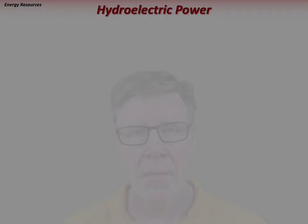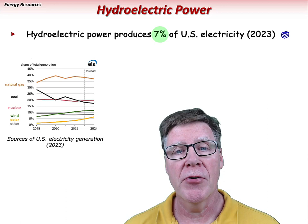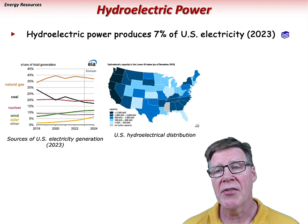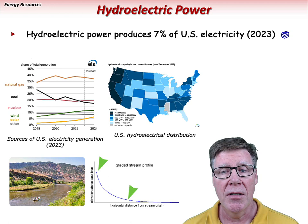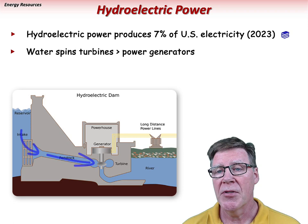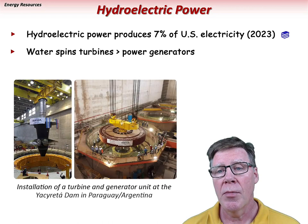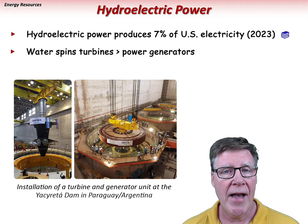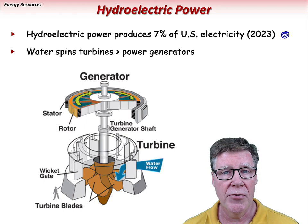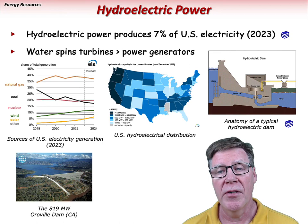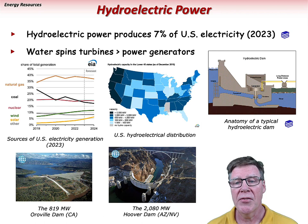Hydroelectric power produces 7% of U.S. electricity as of 2013 and is most important along the west coast, several western states, and the southeast. The concept is to dam a large river with significant flow volume and drop in elevation; water falls through a penstock, where its potential energy spins turbines which power generators. Notable examples include the 819-megawatt Oroville Dam on the Feather River in Northern California, the 2,080-megawatt Hoover Dam on the Colorado River on the Arizona-Nevada border, and the Grand Coulee Dam providing about 6,800 megawatts using the Columbia River in Washington.